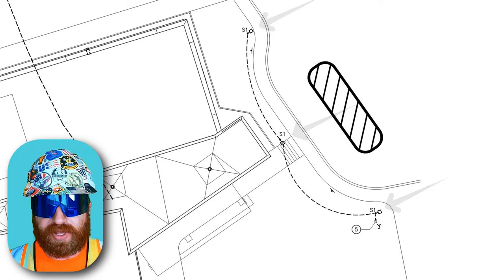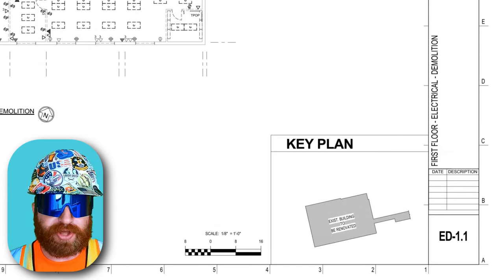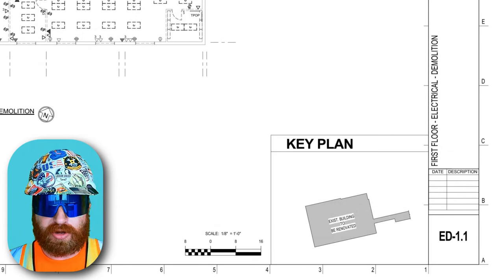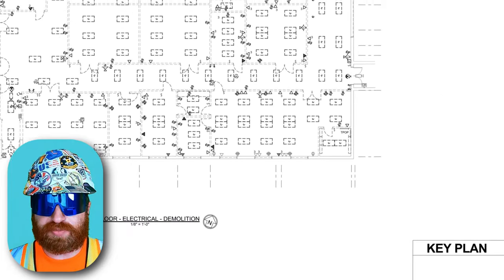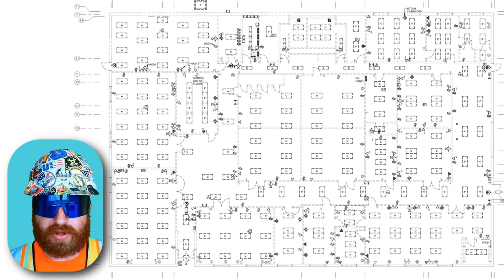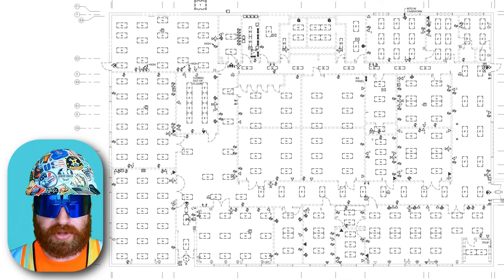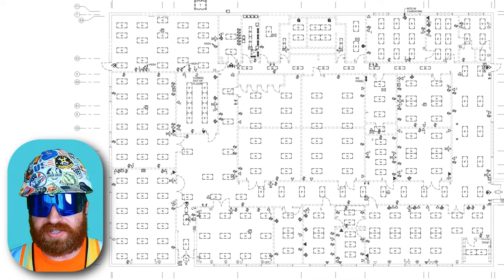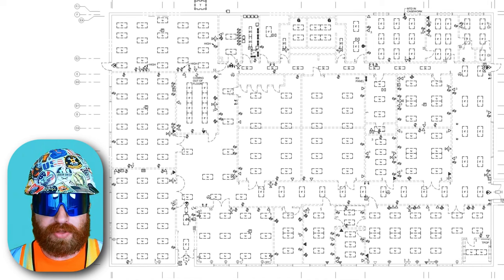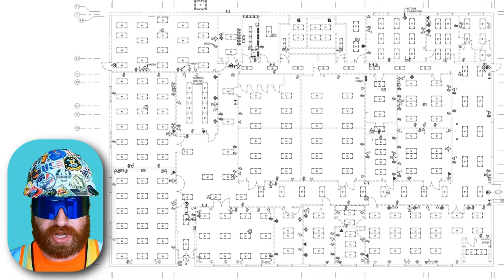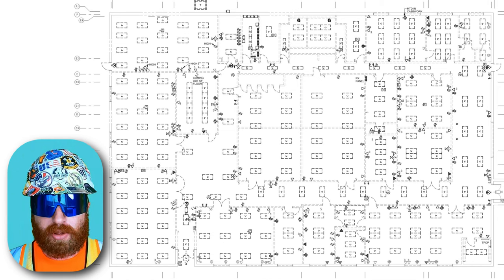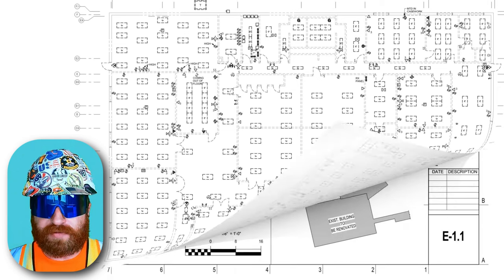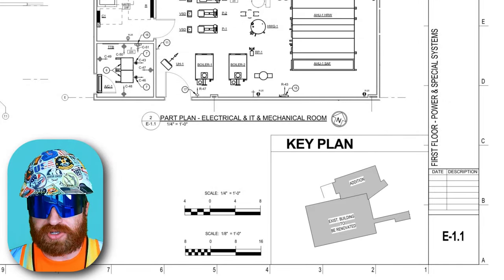On to ED1.1, which is our electrical demolition plan. If you've watched my previous videos, the general idea is that dashed lines indicate demolition while solid lines show items existing to remain — but we need to read all the notes and double-check the details. Other than that, we're going to move on to E1.1, our first floor power and special systems.